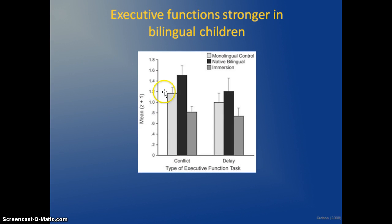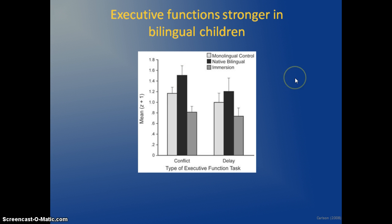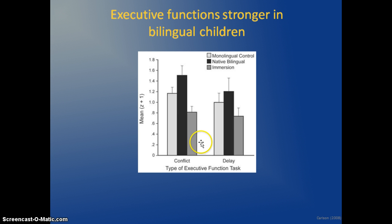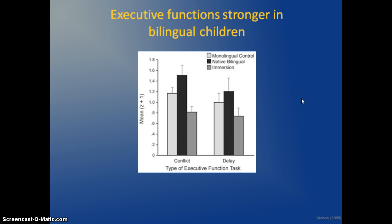One study showed that children in a monolingual environment scored lower on executive function tasks compared to children who are bilingual from birth — those in a home where one parent speaks one language and the other speaks another. Those bilingual children showed superior executive function. Immersion programs are also likely to show a benefit in executive function, just as native bilingual environments will.